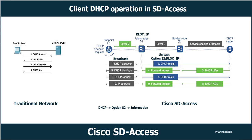Step 3 — DHCP Offer: the DHCP relay is received by the DHCP server. The DHCP server, located outside the fabric, replies with a DHCP Offer directed to the anycast gateway IP address. The Option 82 information encoded by the fabric edge S1 is copied back unaltered into the DHCP Offer by the DHCP server, so the information sent earlier is now available in the DHCP Offer message.